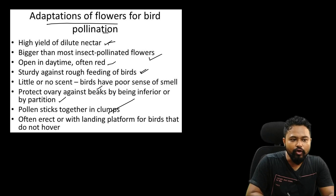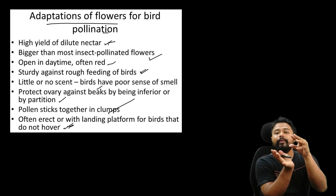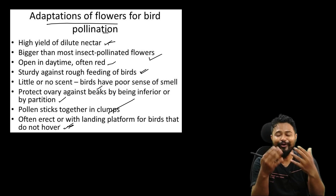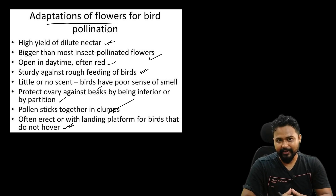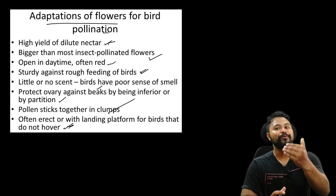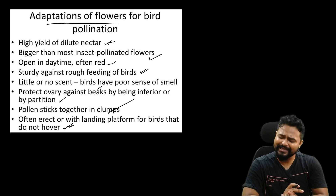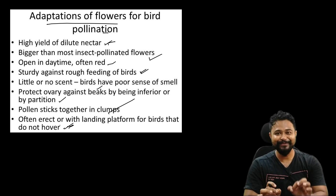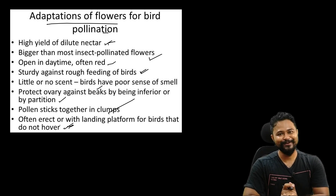Some pollen grains stick together in clumps. Flowers are often erect or have landing platforms for birds that do not hover. This was all about adaptations in pollination — thank you so much for watching. Meet you in the next class, bye bye.